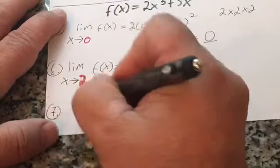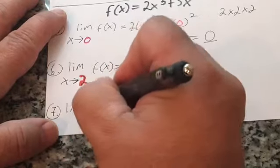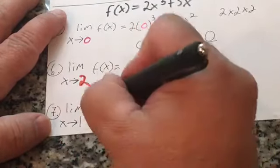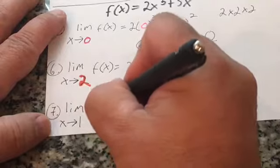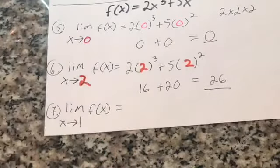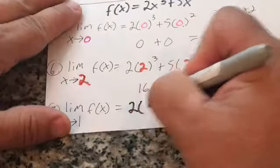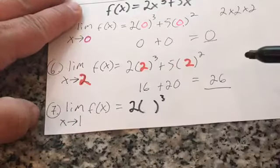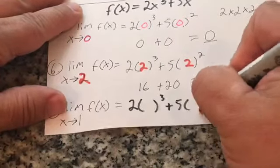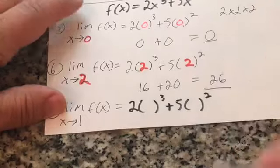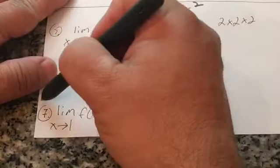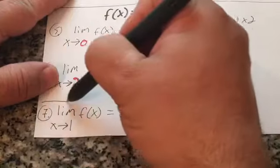Last one: the limit as x approaches one of f of x equals 2 times something cubed plus 5 times something squared. I'm going to let you do this one on your own. I'll ask you the question in Google Classroom.